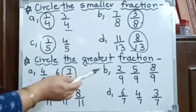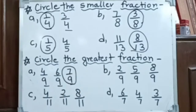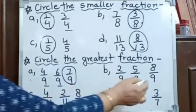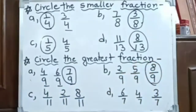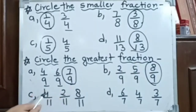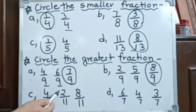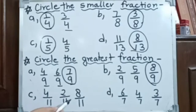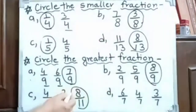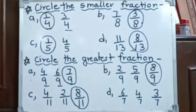Here we have 2 by 9, 5 by 9, and 8 by 9. Which one is greater? 8 by 9, as it has the greater numerator. Here we have 4 by 11, 2 by 11, and 8 by 11. So greater numerator with the same denominator is greater. So 8 by 11 is greater.